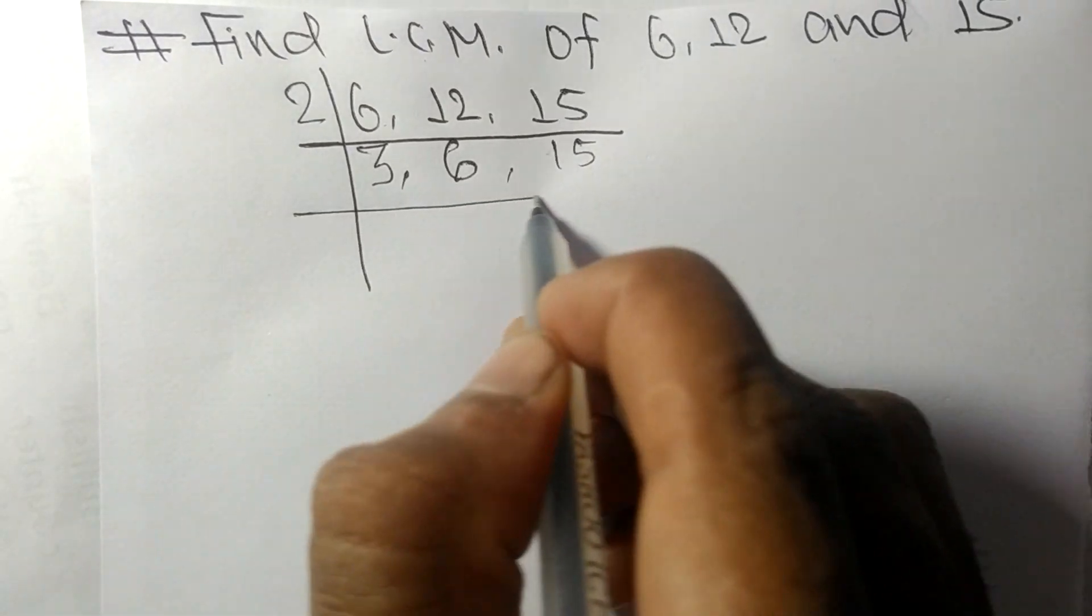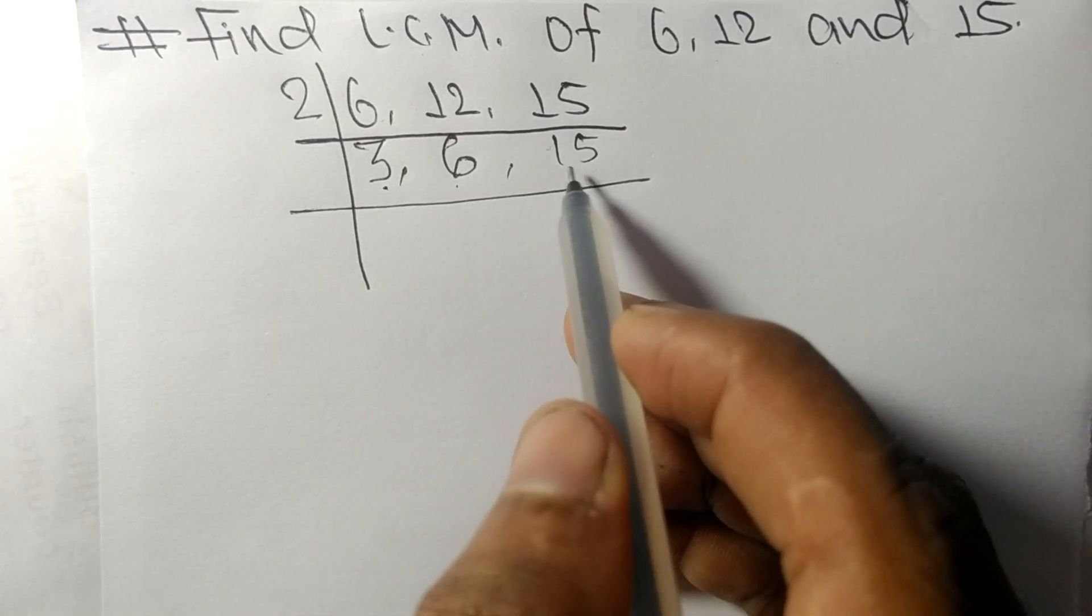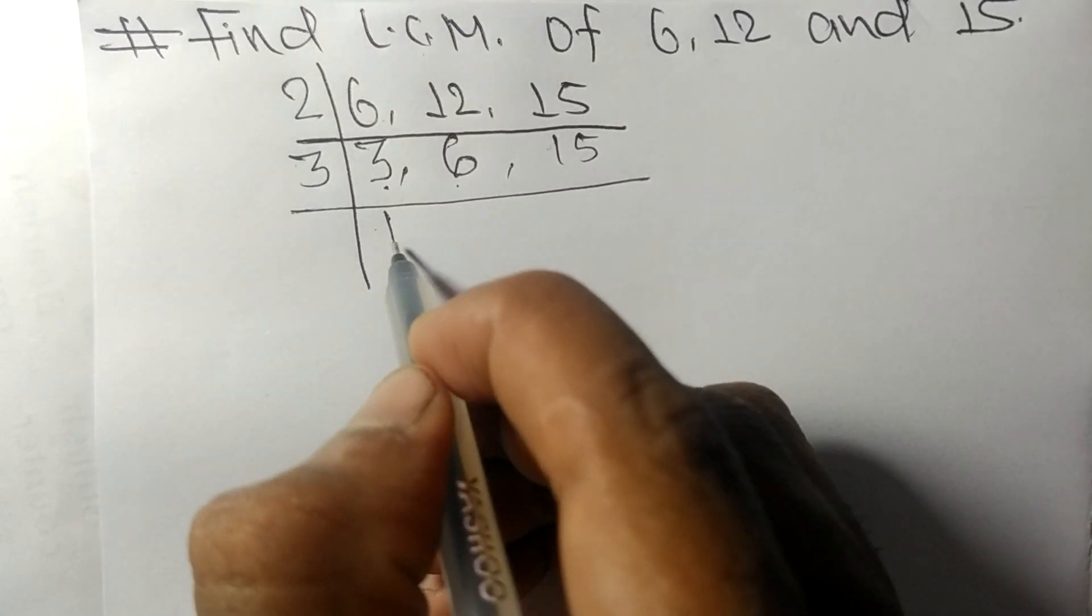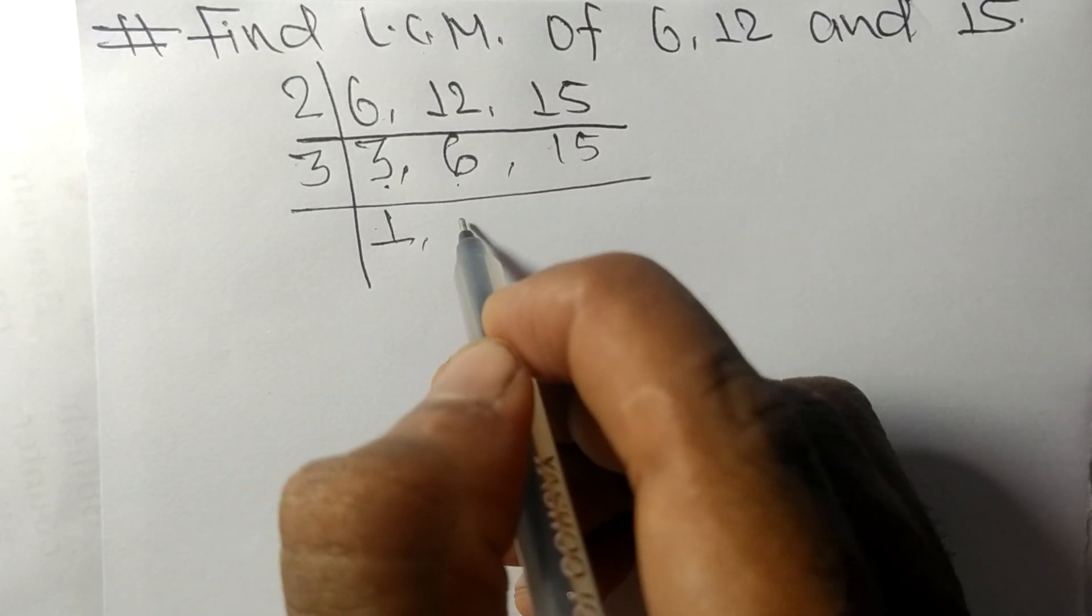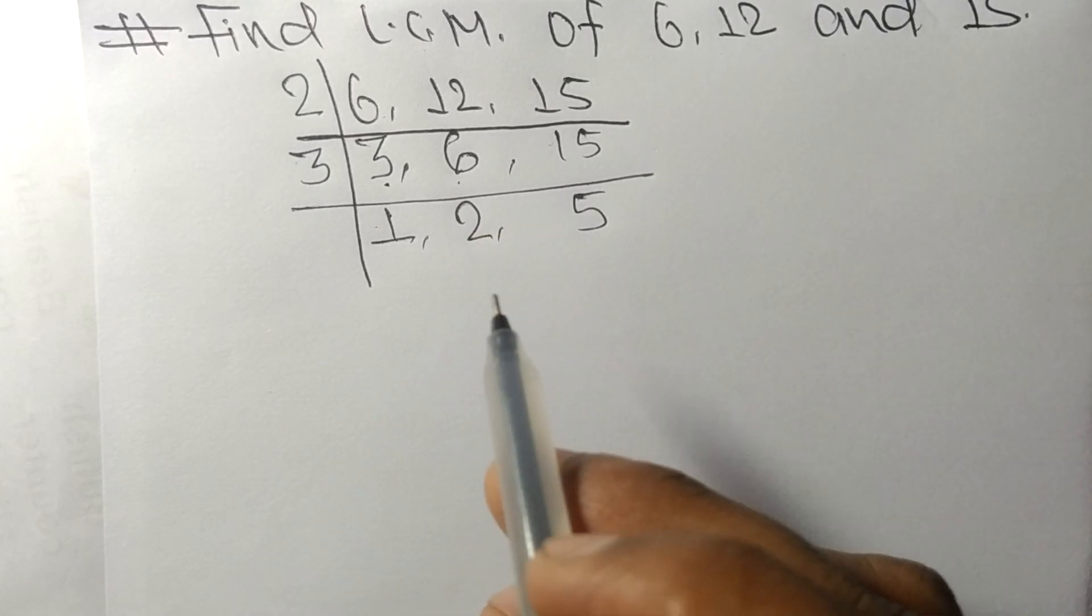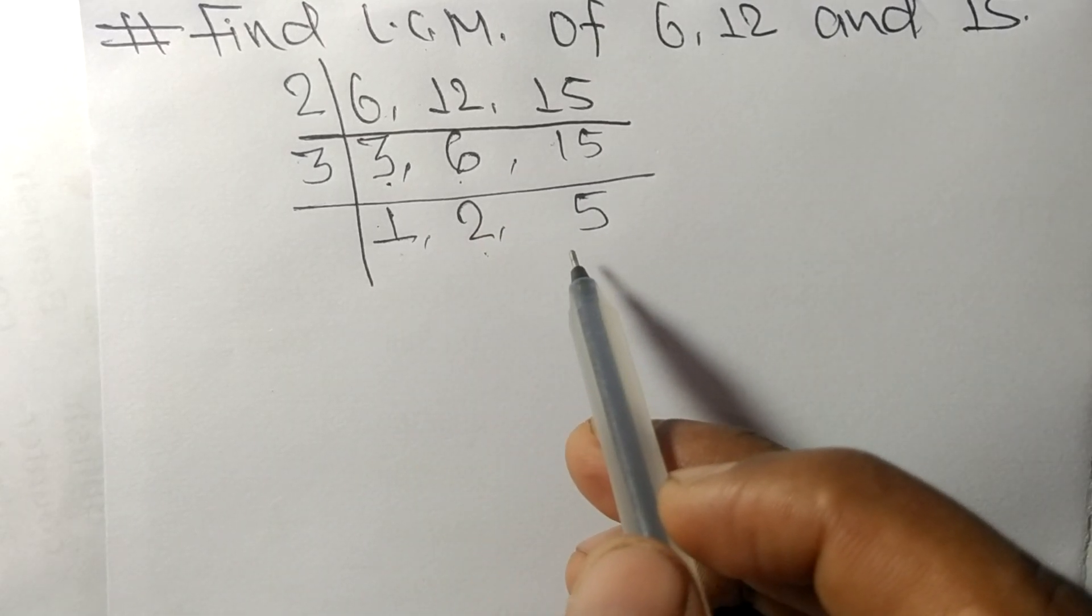Now 3, 6, and 15 are exactly divisible by 3. 3 times 1 means 3, 3 times 2 means 6, 3 times 5 means 15. So now we got 1, 2, and 5 which are not exactly divisible by the same number.